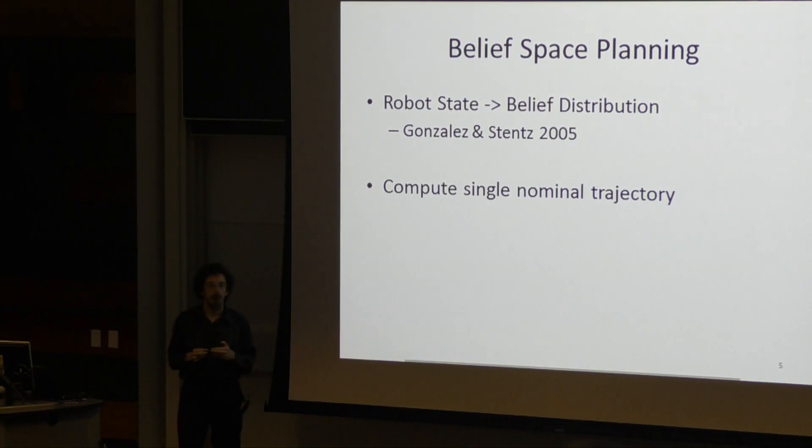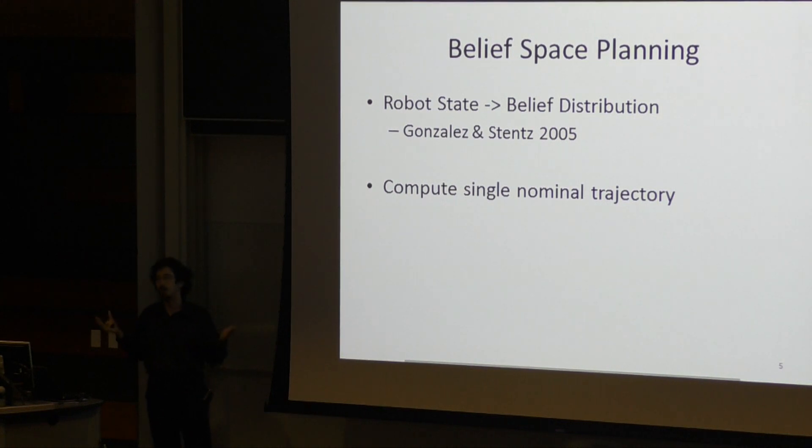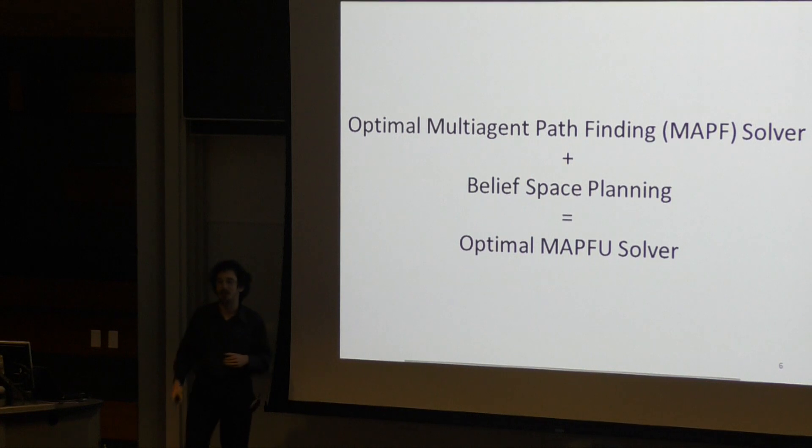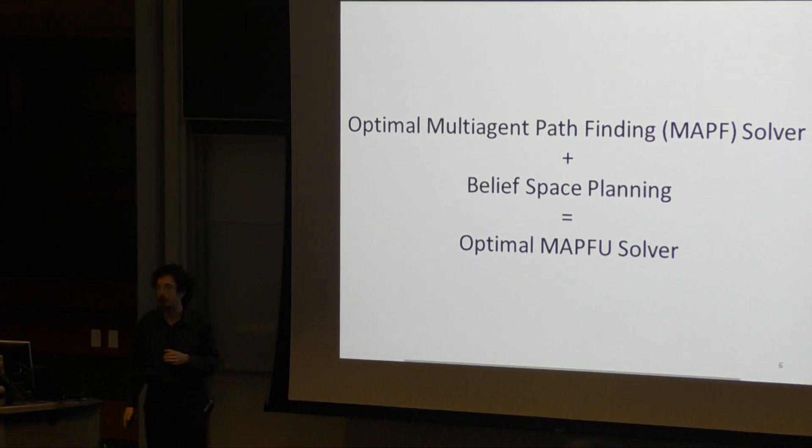This results in much faster planning, but will fail if your uncertainty ever gets large compared to the spatial scale that defines your environment. At this point, I thought, well, we've got these nice optimal or near-optimal MAPF solvers. We have this notion of belief space planning, so why don't we just munch them together and get a nice optimal MAPFU solver.